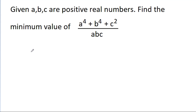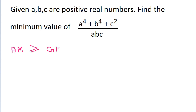Since we have to find the minimum value, we can use the AM-GM relation. We know that AM is always greater than or equal to GM.